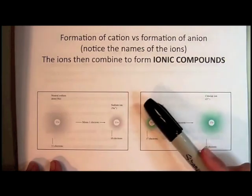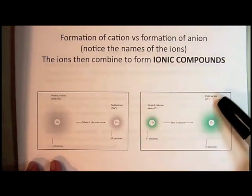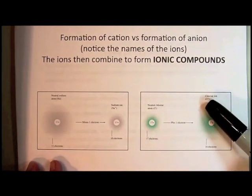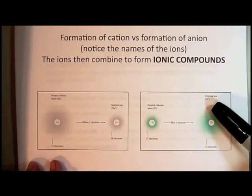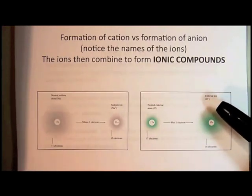Notice the name change. Chlorine atom, chloride ion. Whenever an anion is formed, the elemental name changes and the suffix ide is added to it. This is an example.